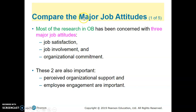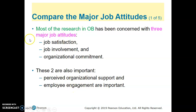The major job attitudes studied in organizational behavior consist of three major parts: job satisfaction, job involvement, and organizational commitment. In addition, there are also perceived organizational support and employee engagement. So there are five key outcomes when we talk about job attitudes in organizational behavior.